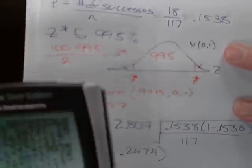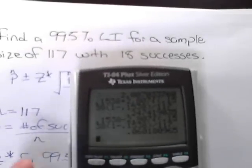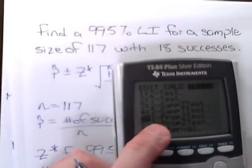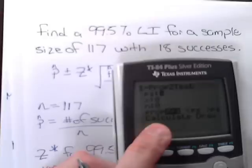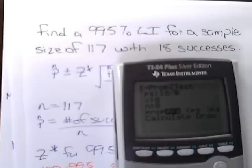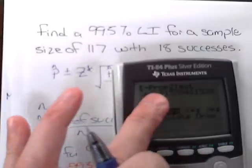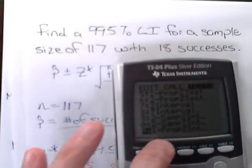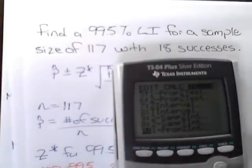This can also be done on the calculator completely. To do this on the calculator I would go to stat tests, and this is a one proportion z interval. We have 18 successes, sample size is 117, and the confidence level is 0.995.